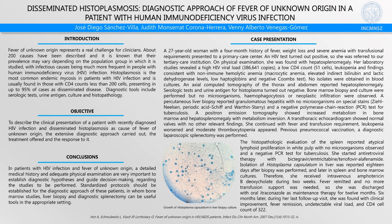Case presentation. A 27-year-old female who was recently diagnosed with HIV infection was referred to the National Institute of Medical Science and Nutrition Salvador Zubirán with a two-month history of anemic syndrome, weight loss, and fever. On physical examination the patient was febrile, pale, with hepatomegaly, splenomegaly, and peripheral lymphadenopathy.